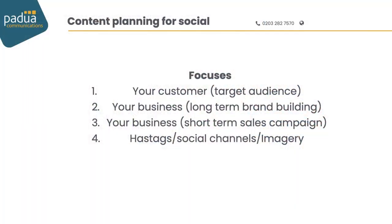When it comes down to it, we have four key areas we go through. The first is the customer and the target audience. Then we look at the client's business from both a long-term and a short-term, more sales-focused point of view. Then we do hashtags, which social channels to use, and what pictures would go with it. That's the natural course of things we go through when planning. When you're doing hashtag stuff, you do need to check the hashtags before you add them to any content.